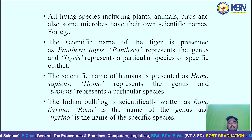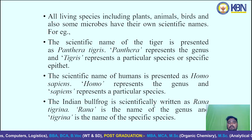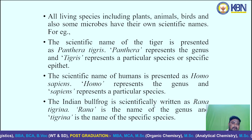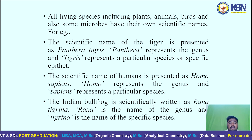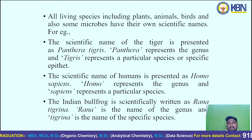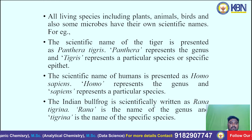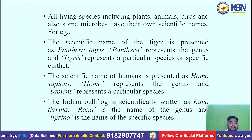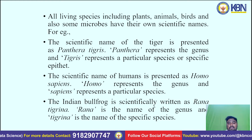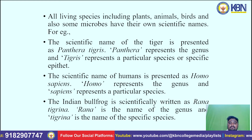For example, the scientific name of the tiger is Panthera tigris — Panthera represents the genus and tigris represents the specific epithet. The scientific name of humans is Homo sapiens — Homo is the genus and sapiens is the species. The Indian bullfrog is scientifically written as Rana tigrina — Rana is the genus and tigrina is the specific epithet.